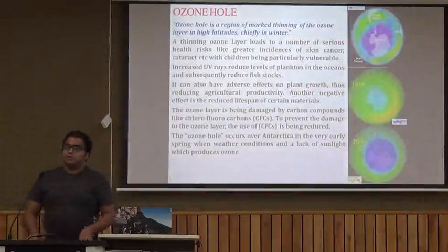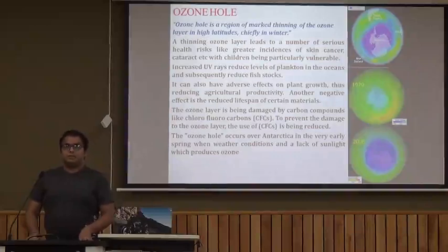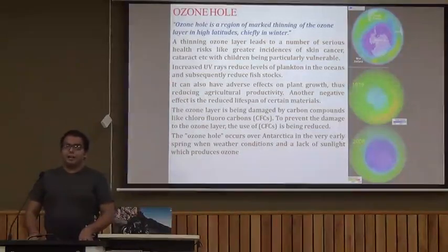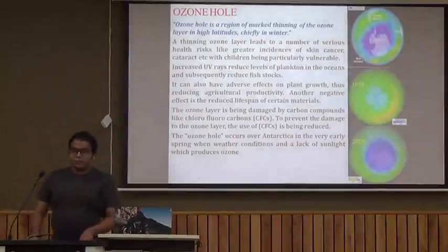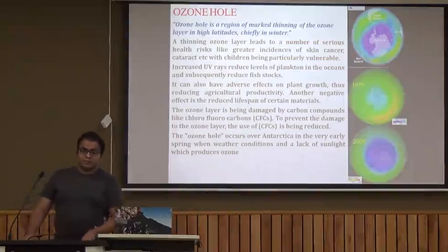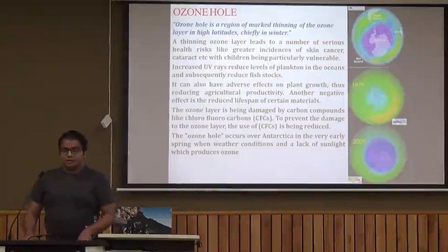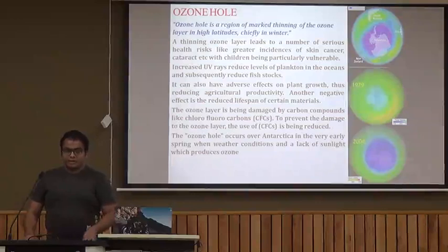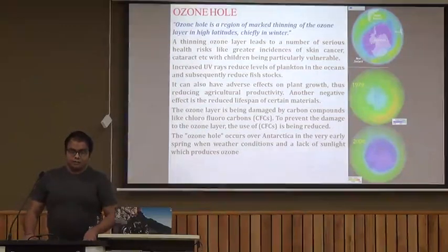Nowadays we observe ozone holes — these are certain regions in the ozone layer where the percentage of ozone decreases, and as a result UV rays are able to reach Earth's surface, causing damage to various life forms. An ozone hole is a region of marked thinning of the ozone layer at high altitudes, chiefly observed during winter. Thinning of the ozone layer leads to serious health risks like skin diseases, cancer, and cataracts. UV rays also reduce the level of plankton in the oceans, which in turn reduces the number of fish, and adversely affects plant growth and all animal life forms.